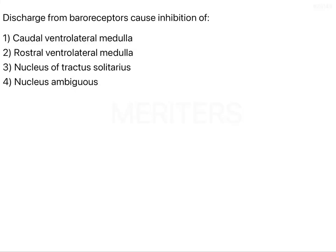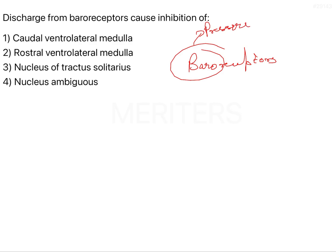Discharge from baroreceptors causes inhibition of which? The options are caudal ventrolateral medulla, rostral ventrolateral medulla, nucleus of tractus solitarius, and nucleus ambiguus. First of all, you should know about the baroreceptor reflex. Baroreceptors — 'baro' means pressure and 'receptors' sense the pressure. The location of the baroreceptors is the carotid sinus and the aortic arch wall.